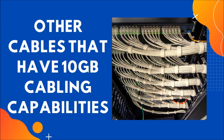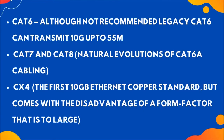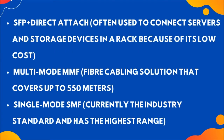Other cables that have 10 Gigabit cabling capabilities: CAT 6, although not recommended as legacy, can transmit 10G up to 55 meters. CAT 7 and CAT 8 are natural evolutions of CAT 6A cabling. CX4 was the first 10 Gigabit Ethernet copper standard, but comes with the disadvantage of a form factor that is too large. SFP+ direct attach is often used to connect servers and storage devices in a rack because of its low cost. Multi-mode fiber, MMF, is a fiber cabling solution that covers up to 550 meters. Single-mode fiber, SMF, is currently the industry standard and has the highest range.